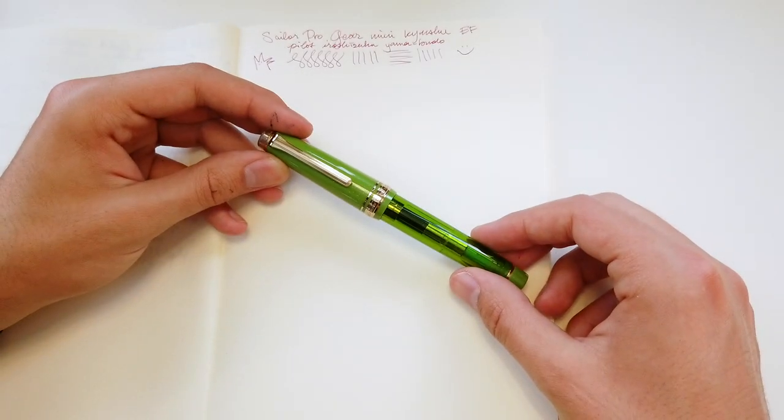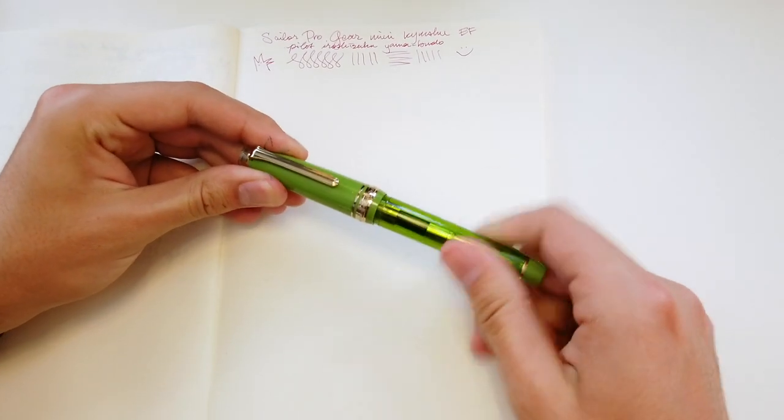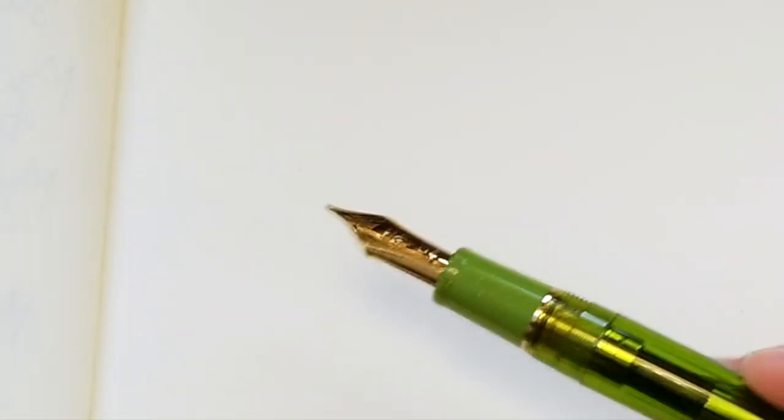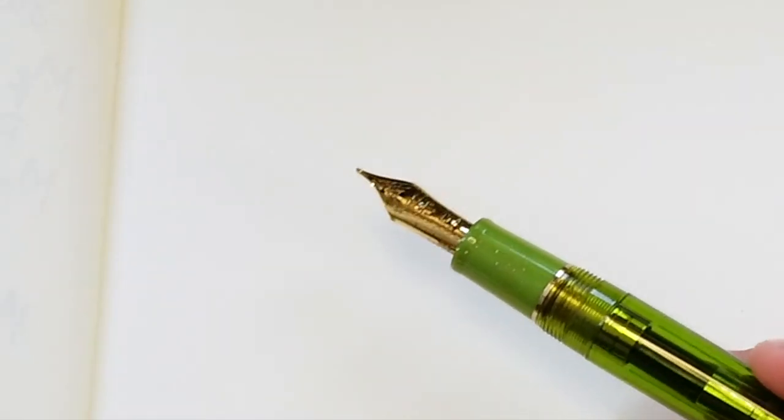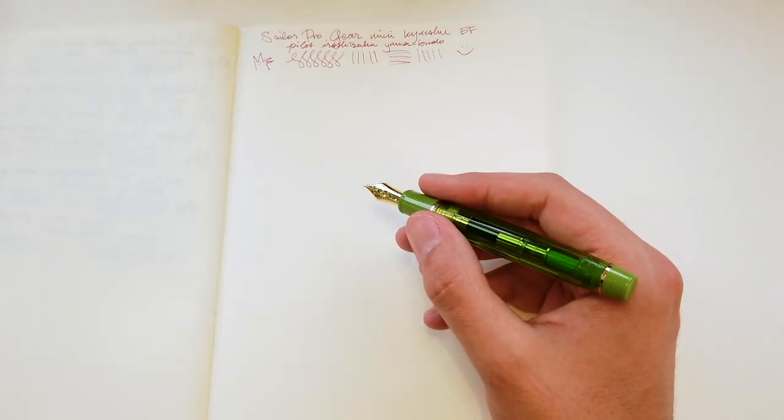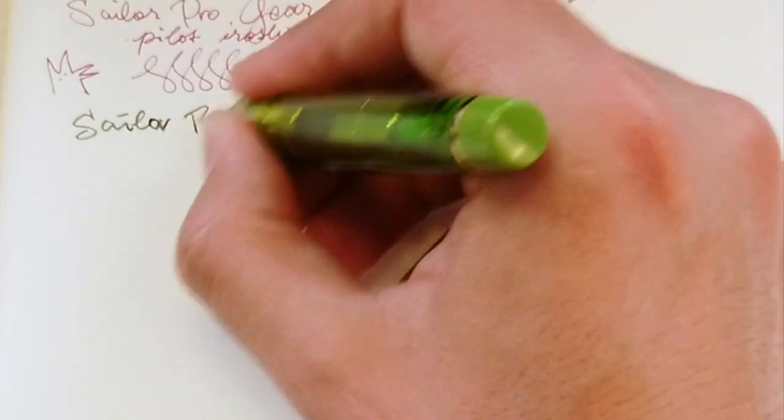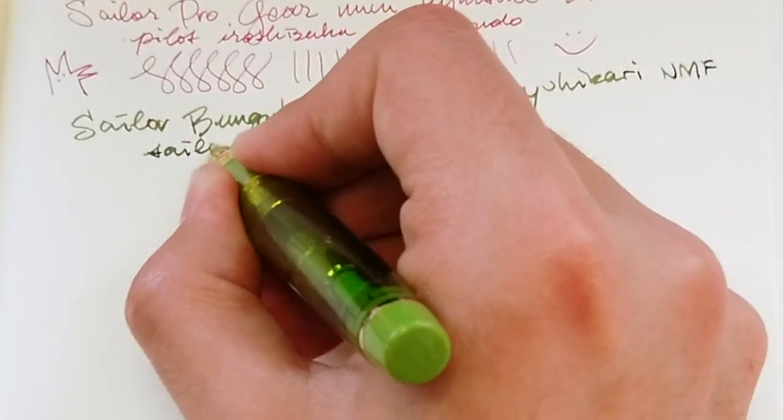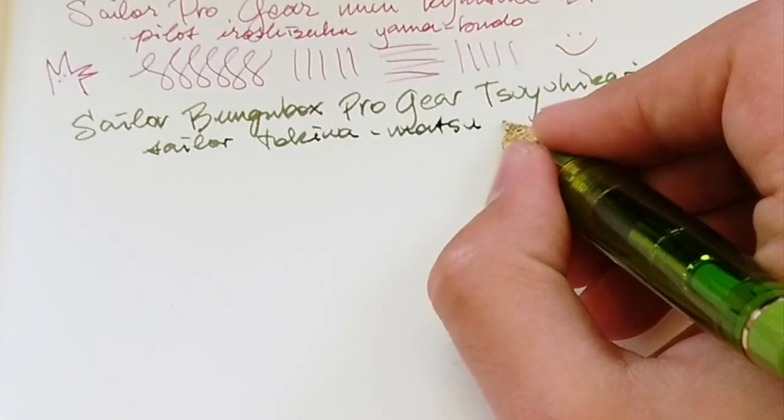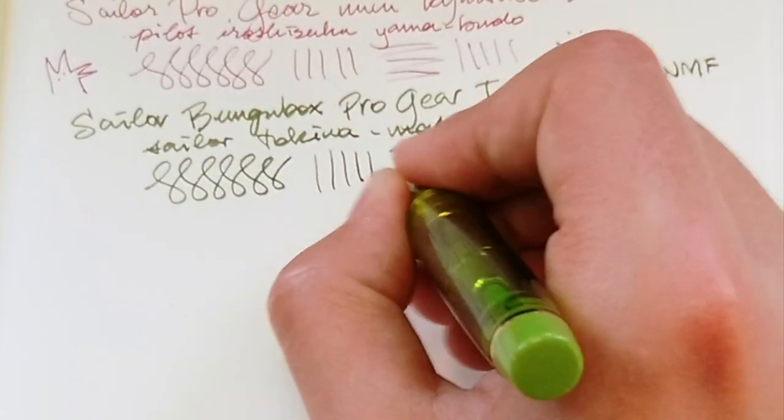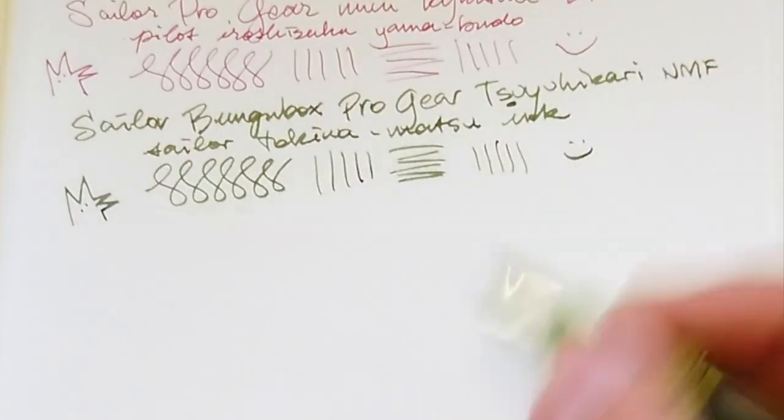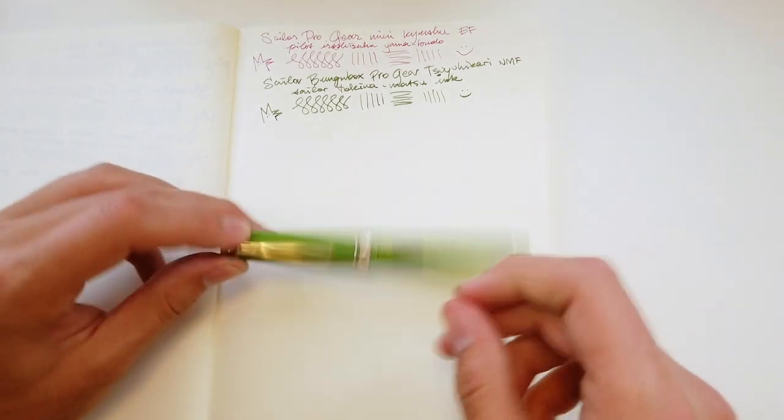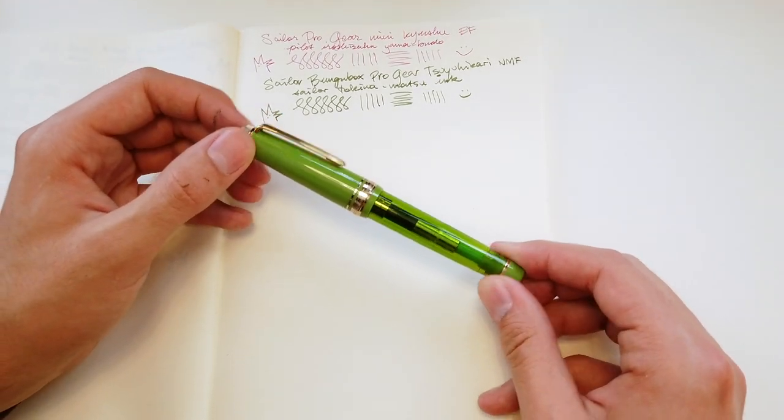The nib is not the original nib that came on here. It is quite a special one. It is a Naginata Togi Medium Fine, which I got off of a whole other Sailor, just a standard black Progear, and then I put the nib that was on here on that and I sold it. It writes incredibly. I loved this pen before it had a Naginata Togi on it, and now it's inseparable from me. It's always round, it's always inked, and I can't get enough of holding it, writing with it, and showing it to people.